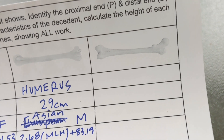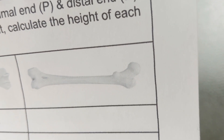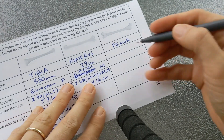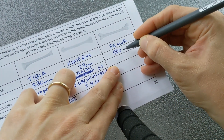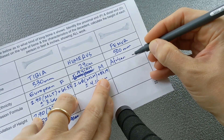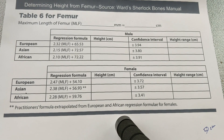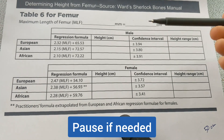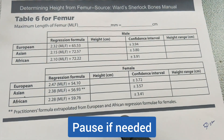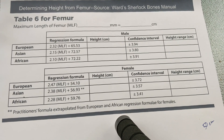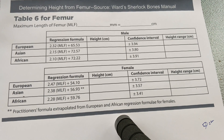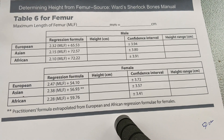For the final bone, it's pretty distinctive because of the ball at the end that fits into your hip joint — that bone is a femur. This time we're going to imagine it is 500 millimeters in length and belongs to an African male. For this final round, I'm not going to give you the regression formula. You need to look at the table, decide which formula and which confidence interval to use, and write down the appropriate formula. Keep in mind that I started you in millimeters, so you will need to divide by 10 to convert to centimeters, then find the final height.